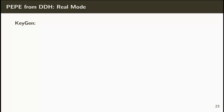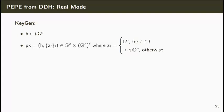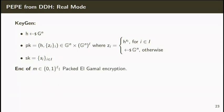Our DDH-based construction shares some similarities with the LWE case. To generate a public key in the real mode, we first sample a vector H composed by n group elements chosen uniformly at random. The public key is composed by the vector H and vectors ZI. These vectors are such that we know their discrete log value with respect to H for positions in I. Otherwise, they are obliviously sampled at random from the group. The secret key is composed by the discrete log values for the positions in I.